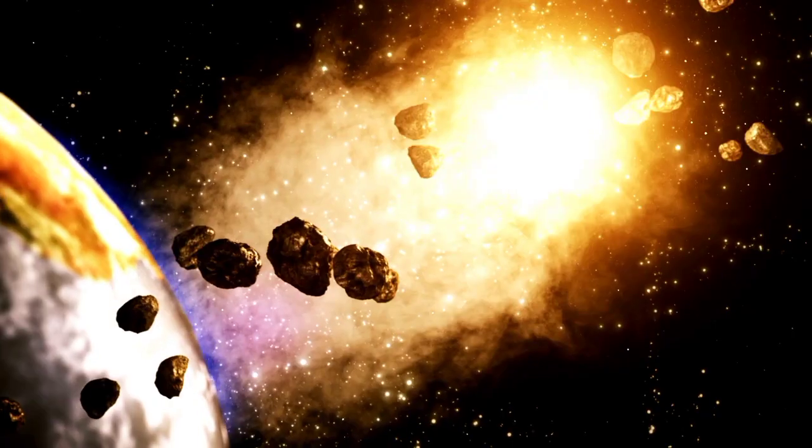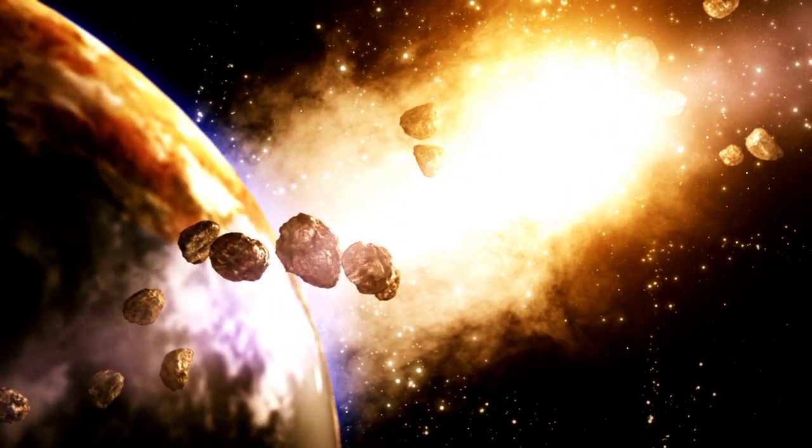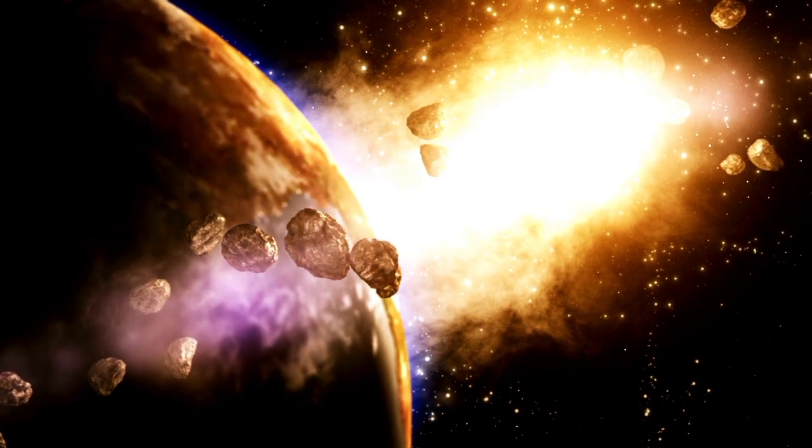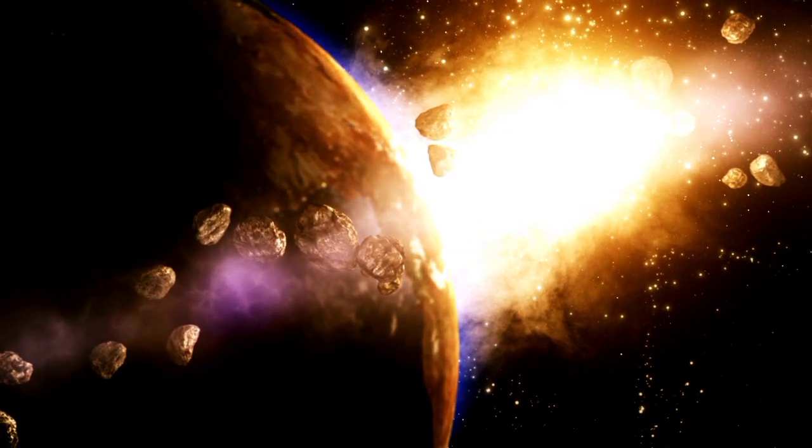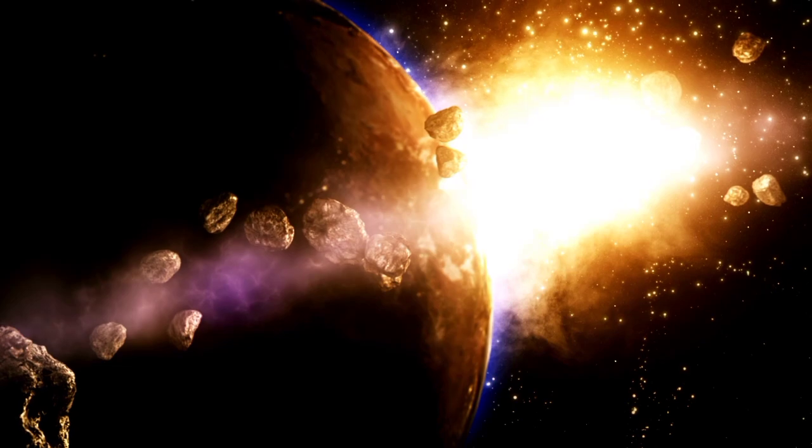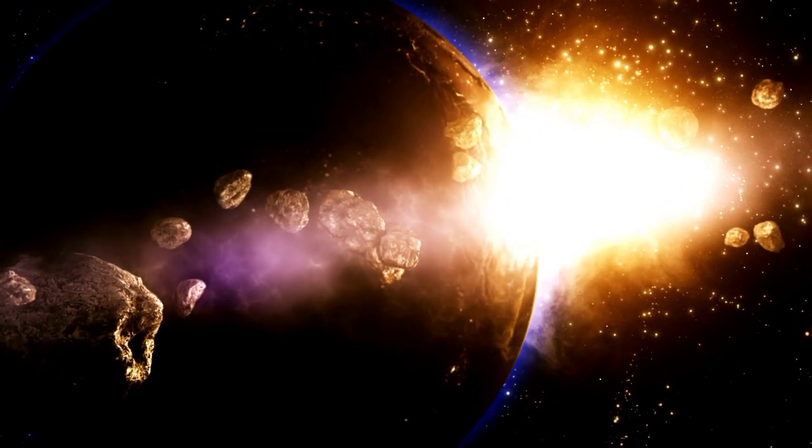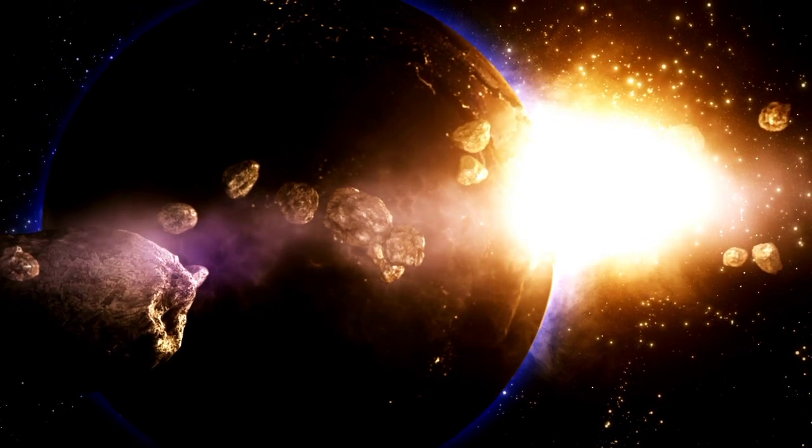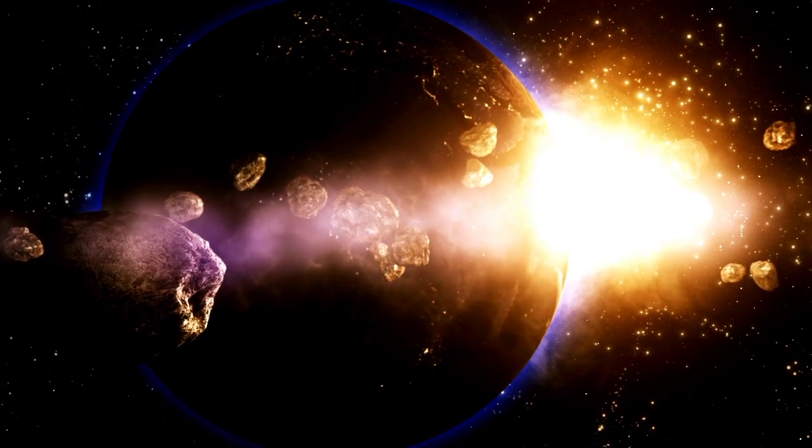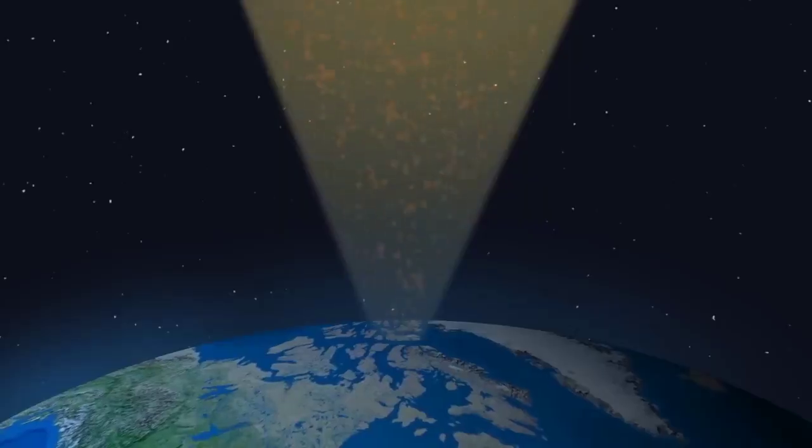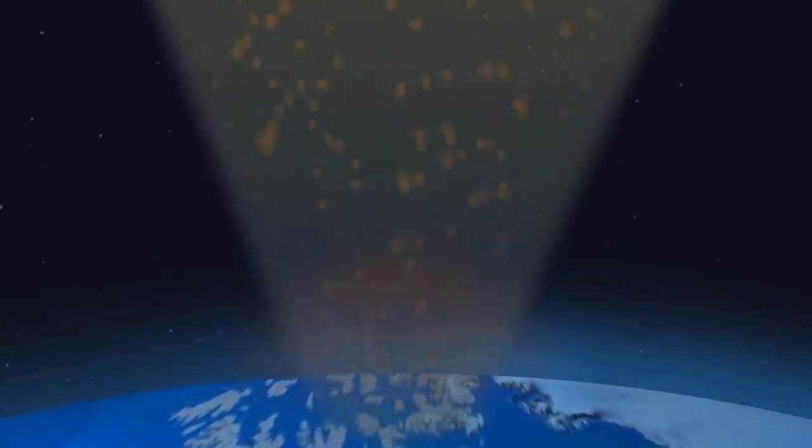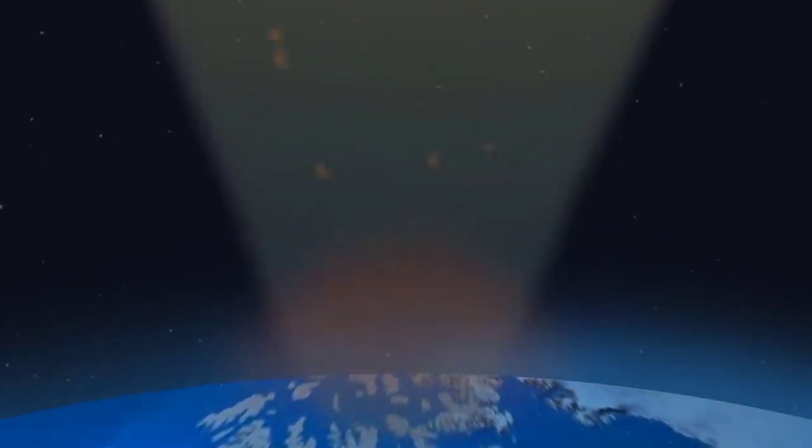Planets are formed by accretion, or when space dust collides and increasingly builds up into a larger mass. After Earth formed about 4.5 billion years ago, a small amount of accretion continued to happen in the form of meteors and meteorites, adding to Earth's mass. But once a planet forms, another process begins: atmospheric escape.